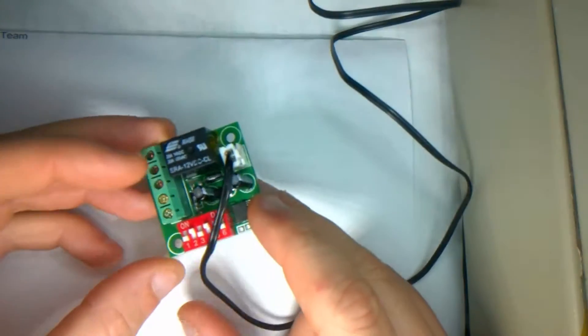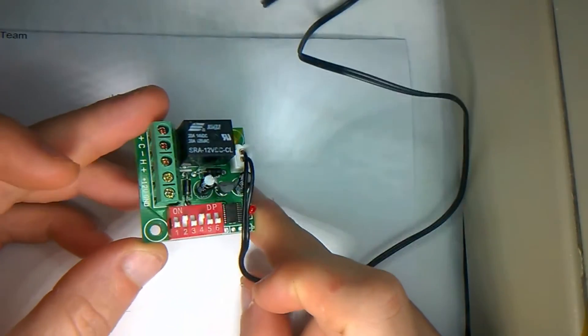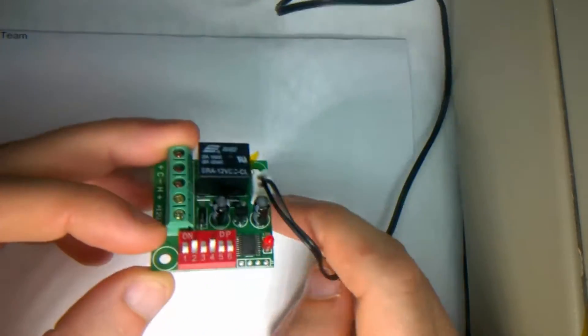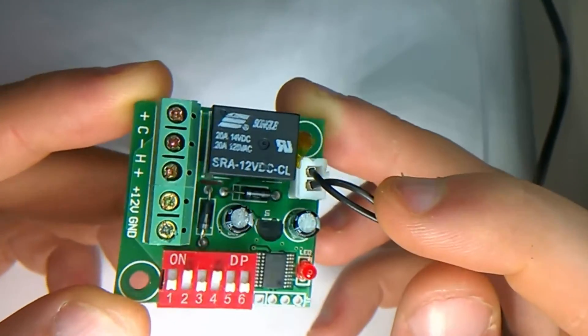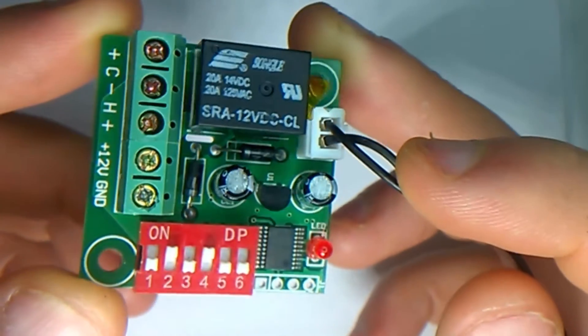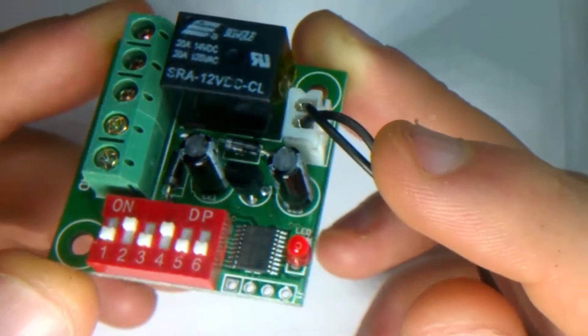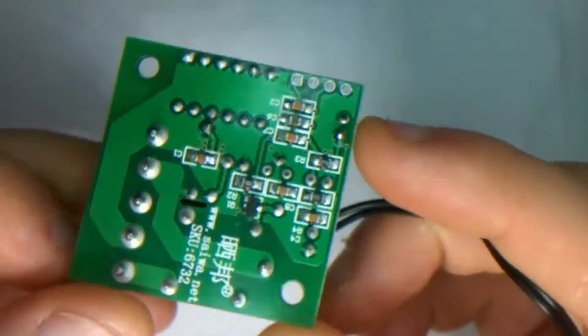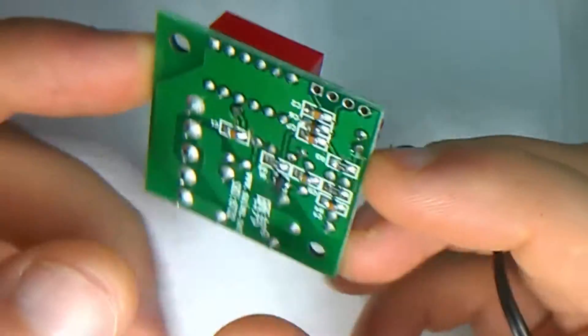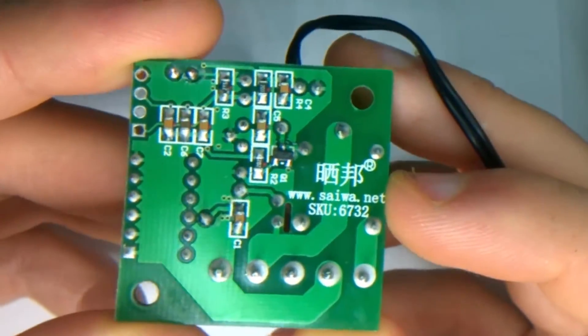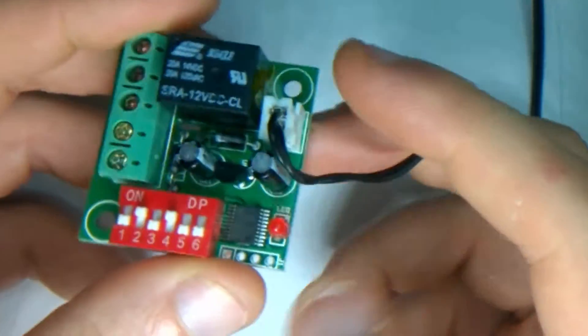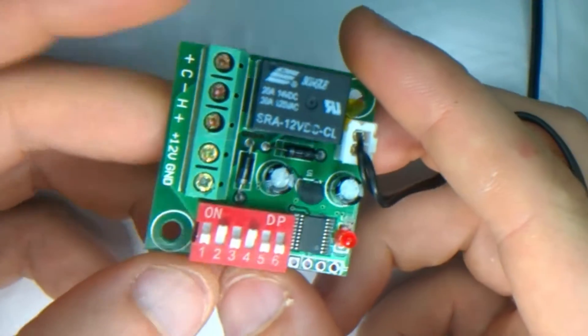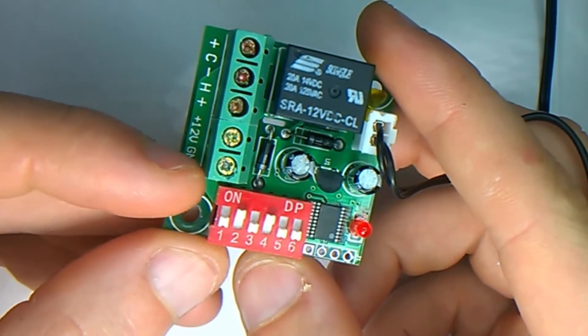So this is a little temperature controlled relay board and before we just talk about it more, I'll just give you a little look. The idea behind this is you feed 12 volts in here and you ground there.